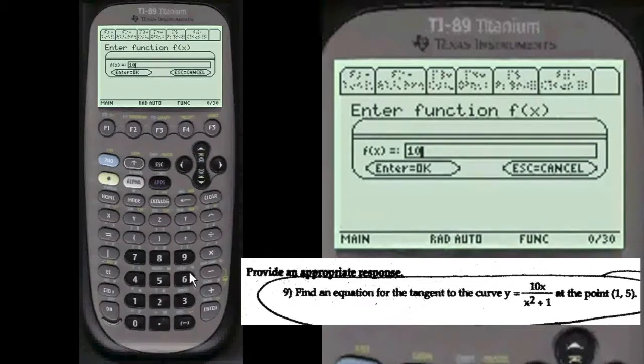10 times x, just an ordinary function. You just add it like you would into the calculator. You don't need parenthesis like we did the quotient rule or the product rule. Divided by, of course, division always needs a parenthesis in the denominator, and that's x squared plus 1.